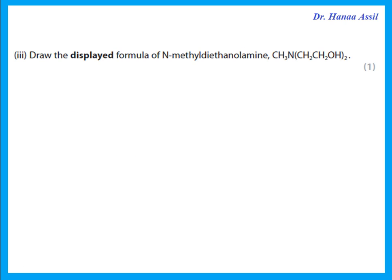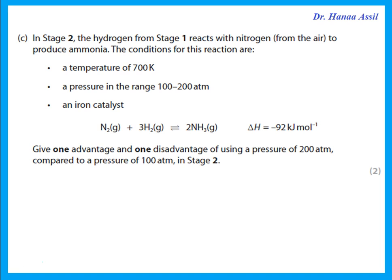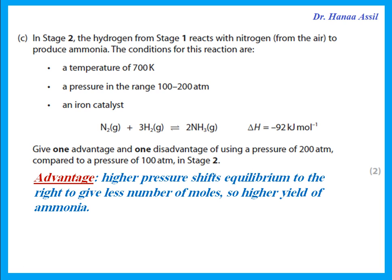Draw the displayed formula of the amine compound — CH₃N attached to two relevant groups. In a displayed formula, show all bonds and all atoms. In stage two, hydrogen from stage one reacts with nitrogen from the air to produce ammonia. Give one advantage and one disadvantage of using a higher pressure (200 atm vs 100 atm). Advantage: higher pressure shifts equilibrium to the right to give fewer moles of gas, increasing the yield of ammonia, and also increases the rate of reaction.